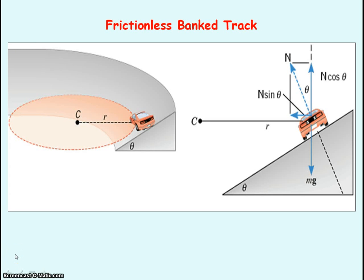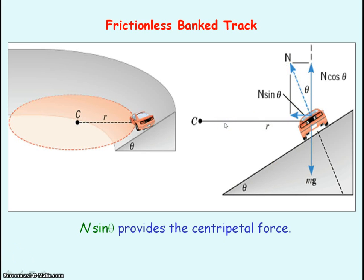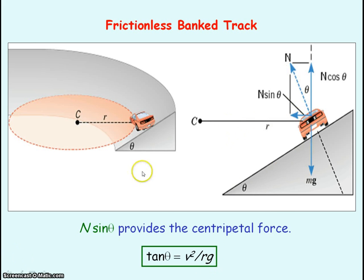For a car on a frictionless banked track, it is the horizontal component of the normal reaction force on the car that provides the centripetal force — that is N sine theta. Again, this theory is similar to the conical pendulum, so we can say that tan theta equals V squared divided by RG for a frictionless banked track.